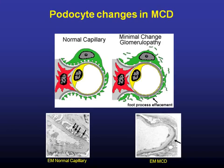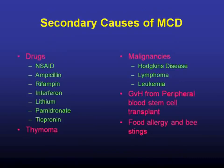There's no difference in minimal change disease between the normal kidney and diseased kidney on light microscopy — which is why it has its name — so you really have to look at the EM. Here's a pictorial depiction of the normal capillary loop and podocytes, and then in minimal change disease you have podocyte effacement. You can clearly see normal podocytes versus foot process effacement on electron microscopy. There are also several reported secondary causes of minimal change disease, including NSAIDs especially, thymoma, malignancies, graft-versus-host disease, and food allergy.